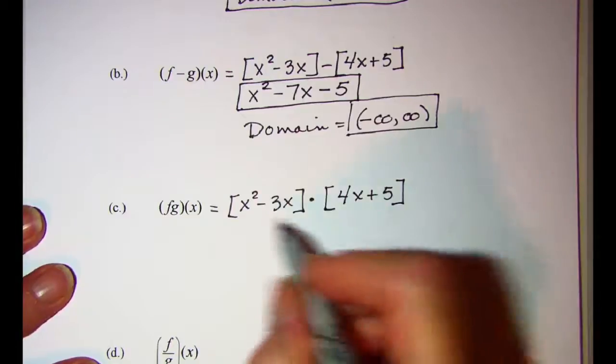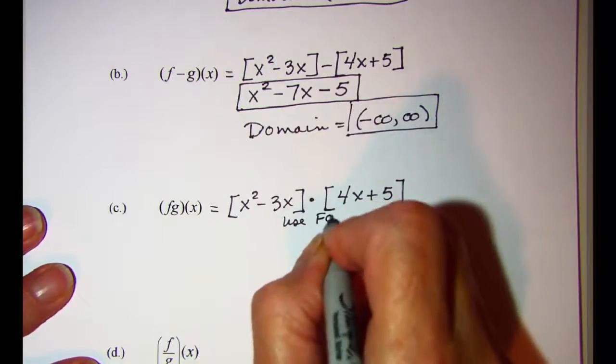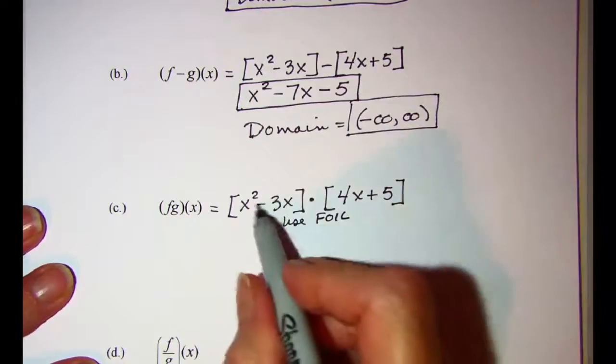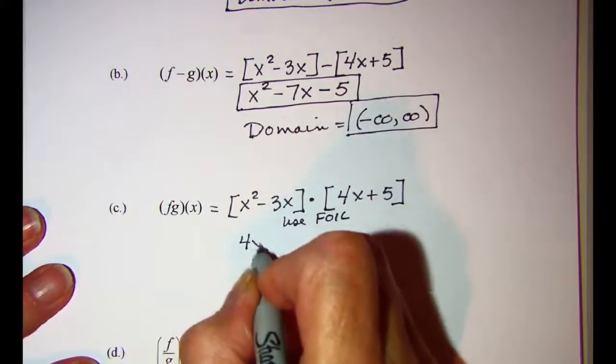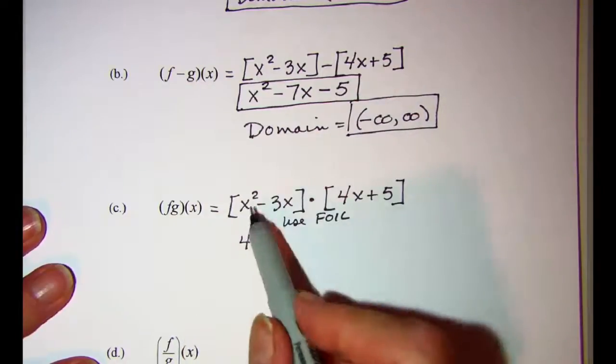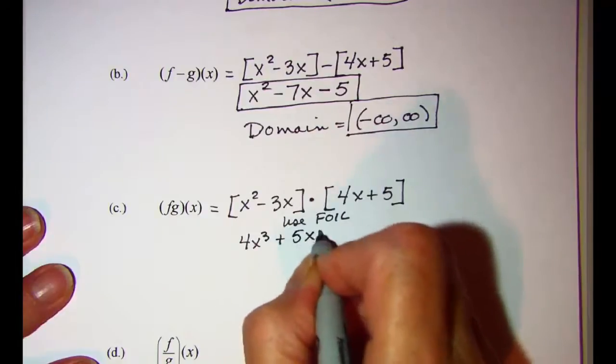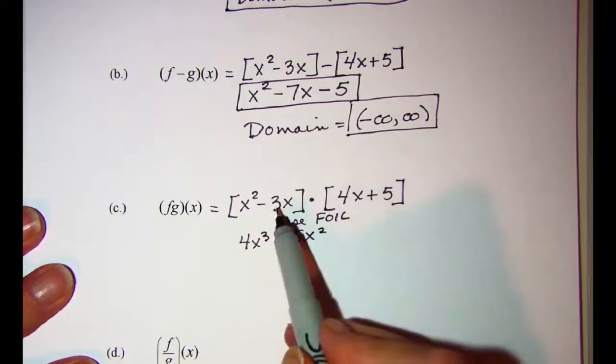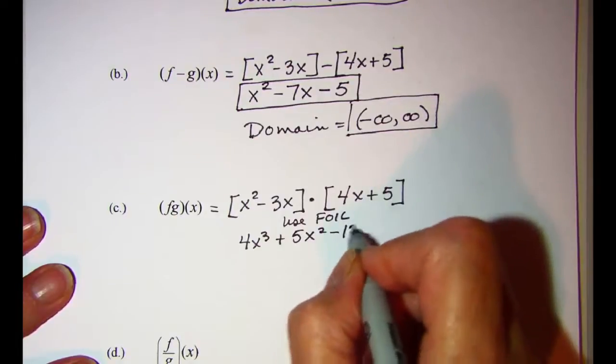We'll need to use FOIL on this. So x squared times 4x is 4x cubed. x squared times 5 is 5x squared.